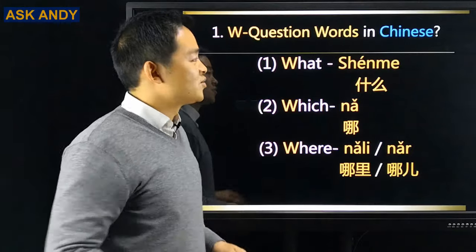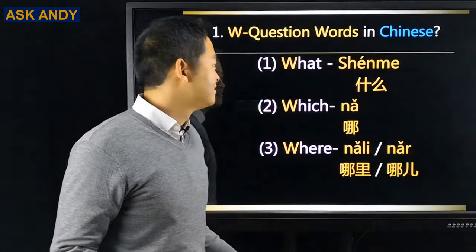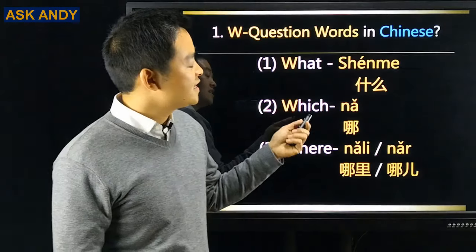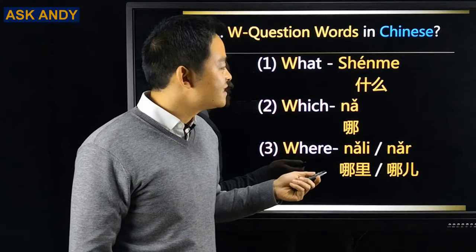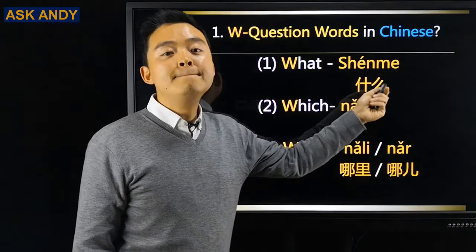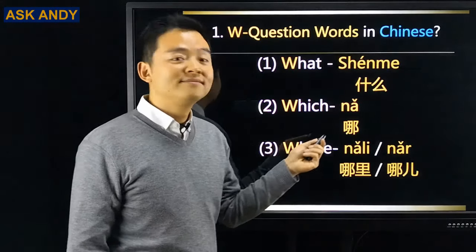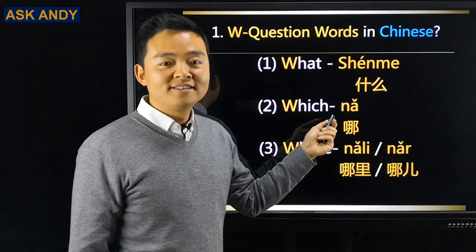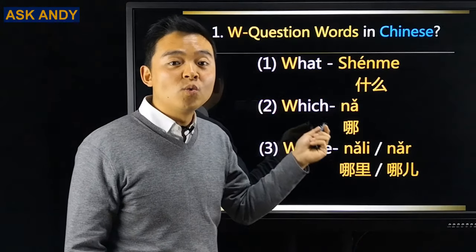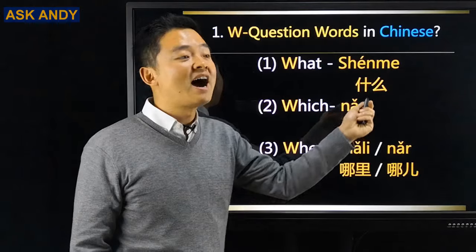Question number one: W-question words in Chinese. Let's see them one by one. Number one: what. What in Chinese is 什么 (shénme). Number two: which. 哪 (nǎ). Remember, this is the third tone. 哪.